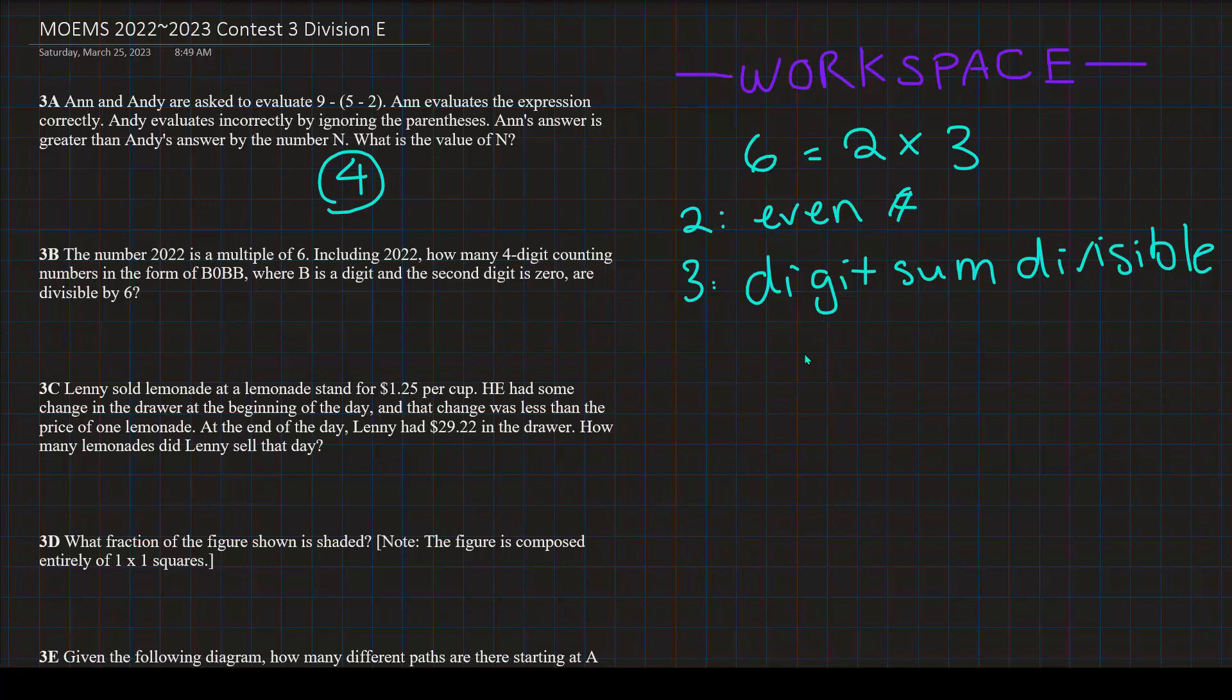Well, first, there has to be an even number. The only even number digits we have, so let me write B0BB out, and the only even digits we have is 0, 2, 4, 6, and 8. Can B be equal to 0? No, because then it would not be a 4-digit number, so we can cross that out. In all of these other numbers, 2,022, 4,044, you'll see that they actually all meet the requirement.